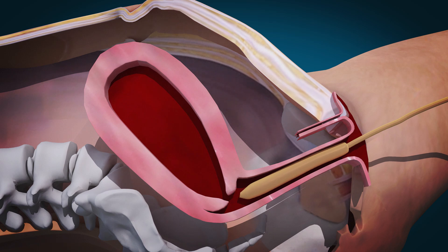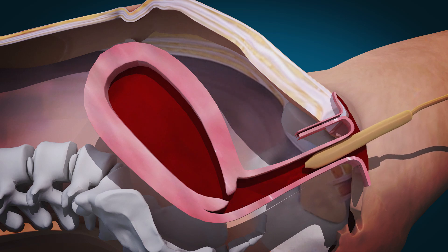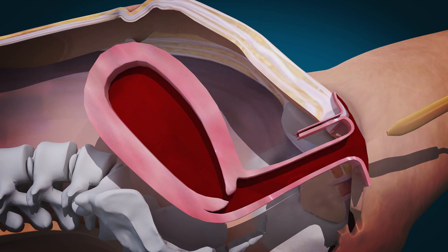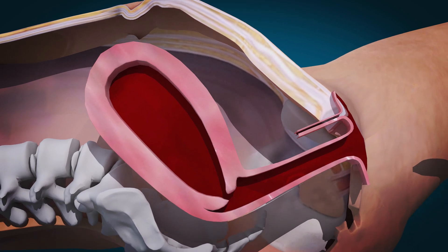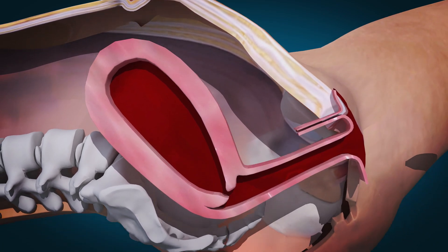If vaginal packing is placed, remove it. Monitor the patient for any sign of bleeding. Please refer to the instruction for use for full procedural instructions.